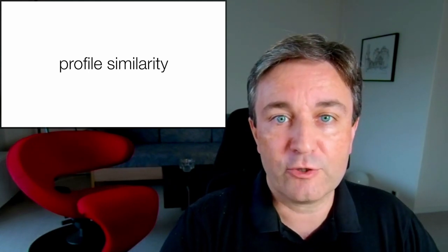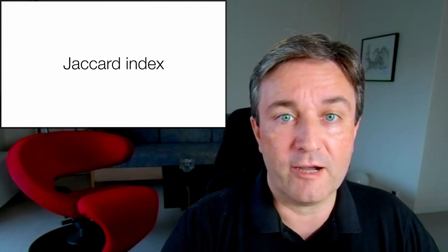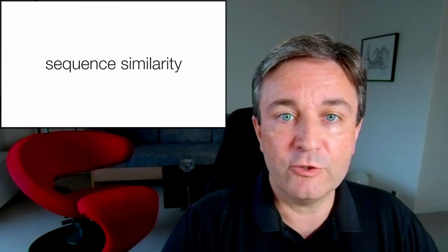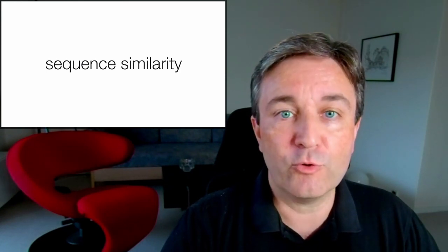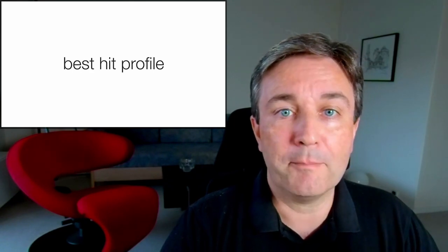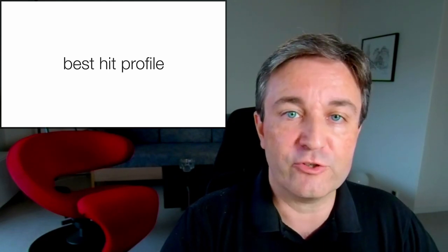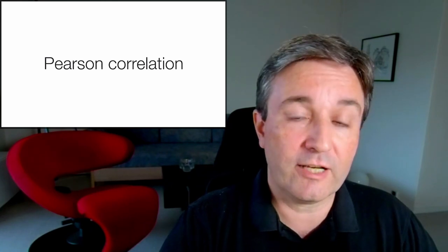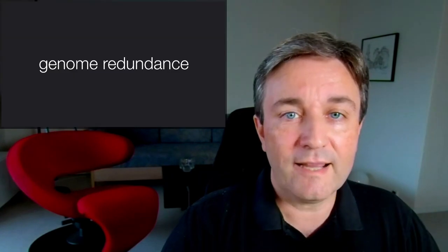So what you do is to calculate profile similarity, which could, for example, be done using the Jaccard index. You can gain even more power by making use of the sequence similarity by not just having a simple presence absence profile, but instead calculating a best hit profile where you quantify how similar is the best hit for this gene in each other genome in your database. And then calculate the Pearson correlation coefficient instead of the Jaccard index for these profiles.